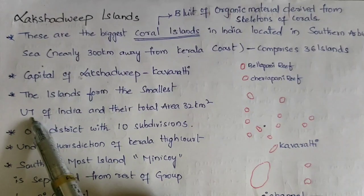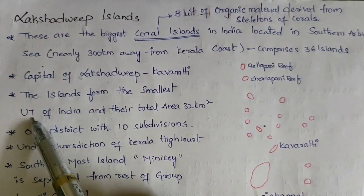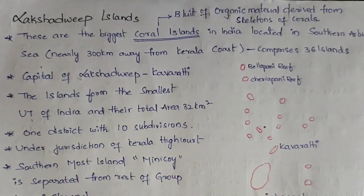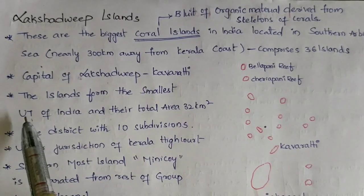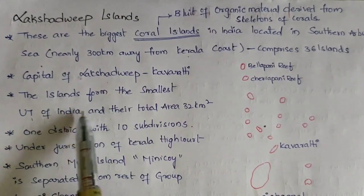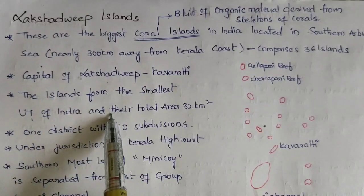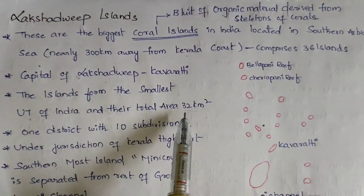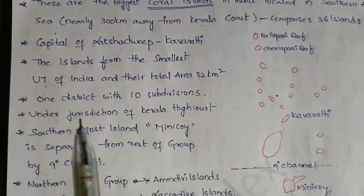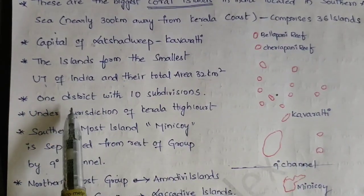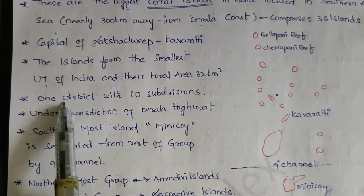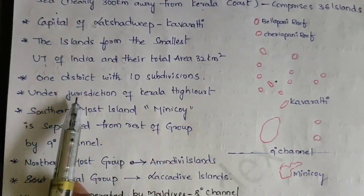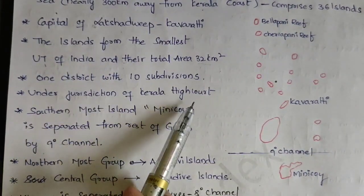Lakshadweep is the smallest union territory in India. Andaman and Nicobar Island is one union territory and Lakshadweep is another union territory — and among all union territories, the smallest is Lakshadweep. Their total area is around 32 square kilometers. This union territory has only one district with ten subdivisions, and it is under the jurisdiction of the Kerala High Court.